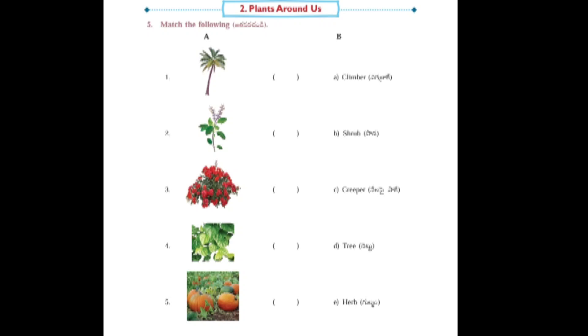Next one: Match the following. First one D tree, second picture E that is herb, third picture A that is climber, fourth picture B shrub, fifth picture C that is creeper.